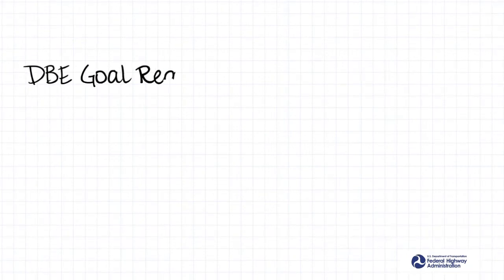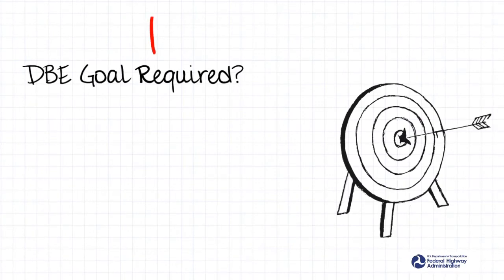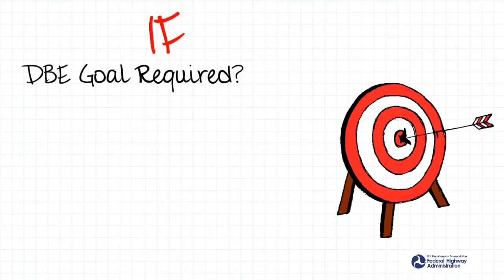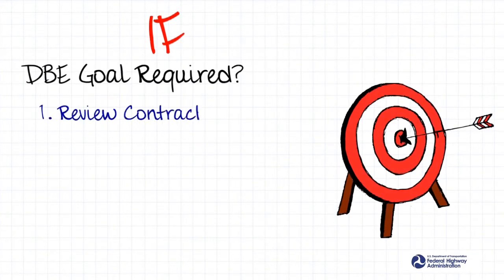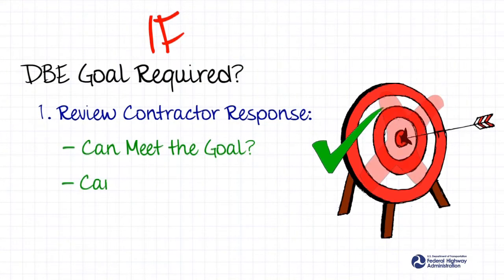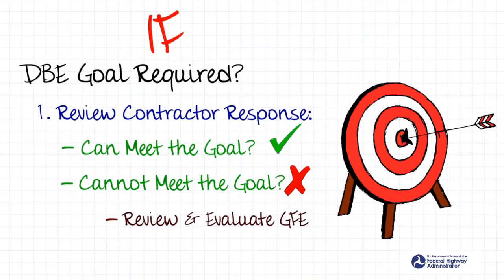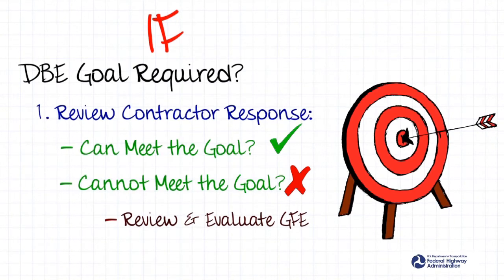Also in the pre-award phase, we must address the DBE goal, which ensures DBE participation. If a DBE goal is included in the advertisement of the federal aid contract, you have these responsibilities: review the prime contractor's response to ensure they are able to meet the goal, or if not, review and evaluate the prime contractor's good faith efforts. Good faith efforts are the actions that prove the contractor took all the necessary and reasonable steps to achieve the contract goal or sufficient DBE participation on the contract.